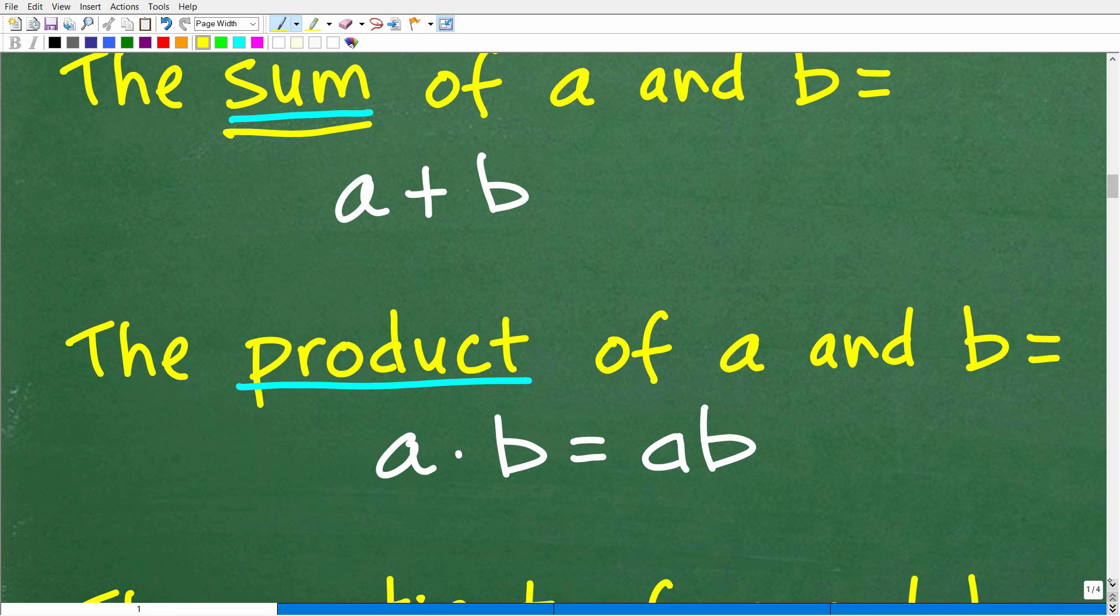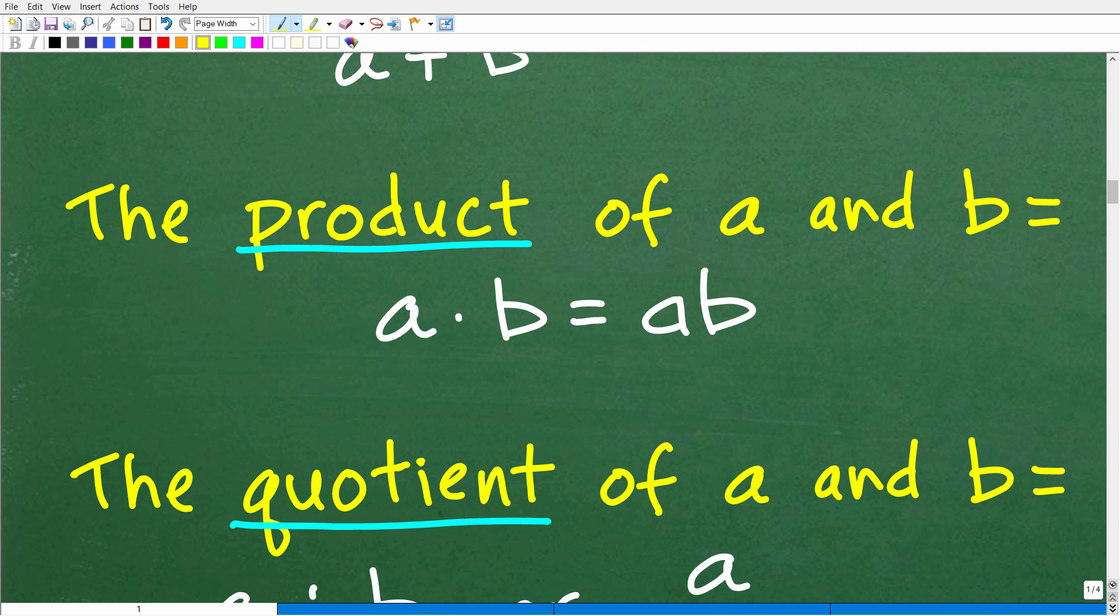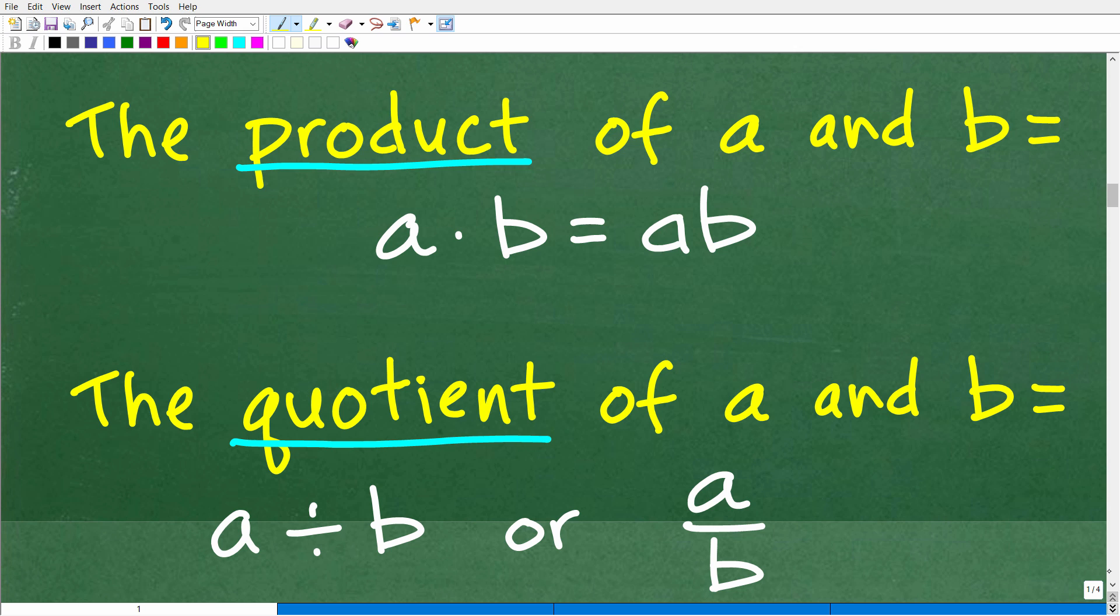Alright. Let's go ahead and take a look at the word product. And of course, we're thinking about multiplication when we hear that word. So the product of A and B is equal to A times B or AB. We can write it this way in algebra. Anytime you have two variables next to one another like this, that means multiplication.